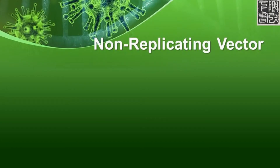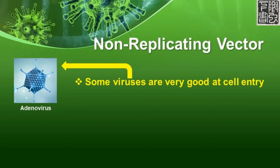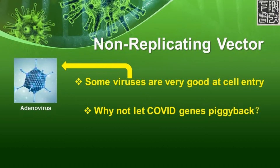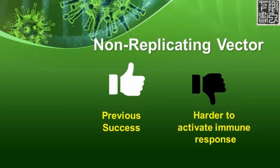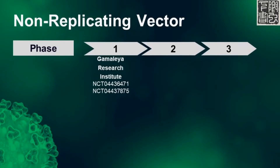Non-replicating vector or carrier is used because some viruses, such as adenovirus, are good at entering cells, and it makes sense to have the COVID spike gene piggyback onto them. This strategy has had success in animals, but not yet in humans. Its downside is that the immune system may have seen the carrier virus before and developed immunity, making it less likely to react against the COVID spike protein made in the vector. The Gamalaya Research Institute in Russia is conducting a Phase 1 trial.